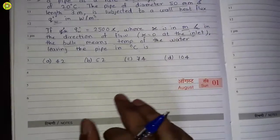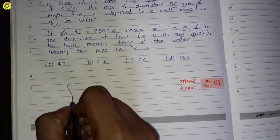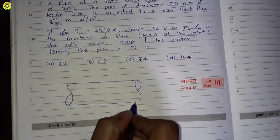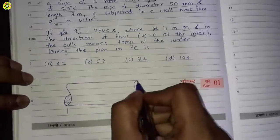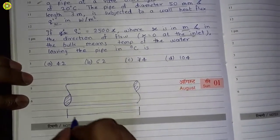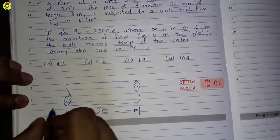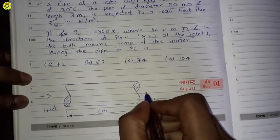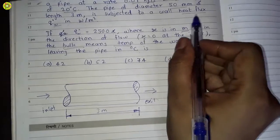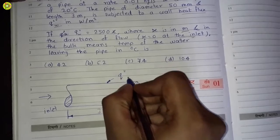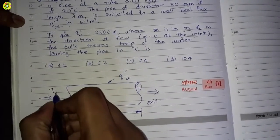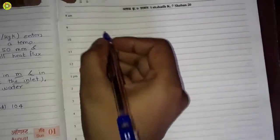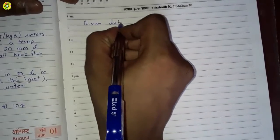We will first draw the diagram to understand the question. Here we draw a pipe with length 3 meters. The inlet is on one side and the exit is on the other side. Flow goes in this direction. The wall heat flux q″w acts on the pipe. The inlet temperature is Ti and the exit temperature is To.